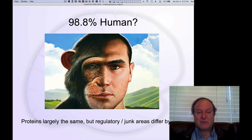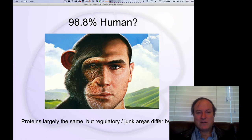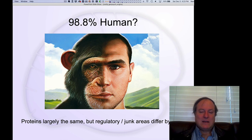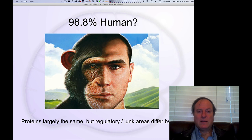Furthermore, as we said, the proteins are really the same across the animal kingdom. But these critical regulatory slash 'junk' areas are the ones that do differ. They differ by about 5%, so when you concentrate on that specific aspect of variance, there's a reasonable amount of difference controlling all the different morphology between chimpanzees and humans. Next, we'll look at the differences between people, which are even tinier.